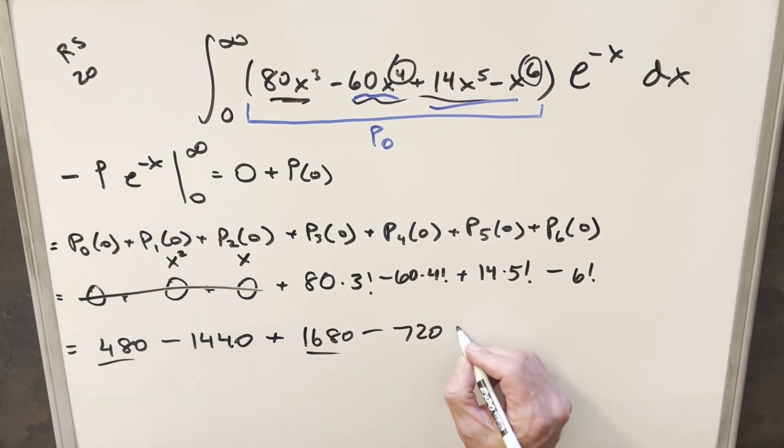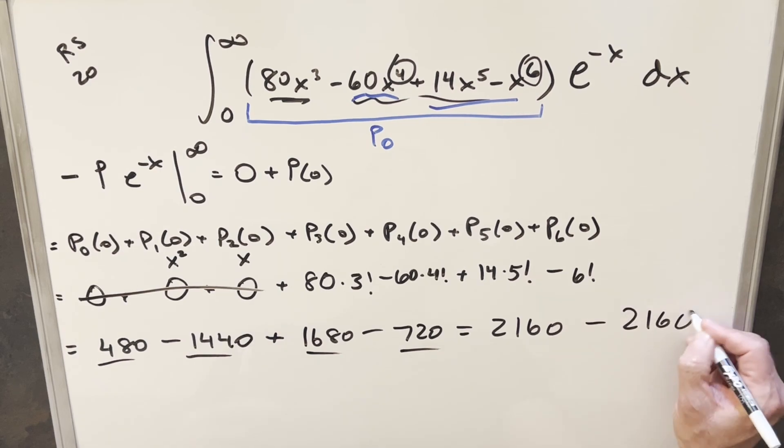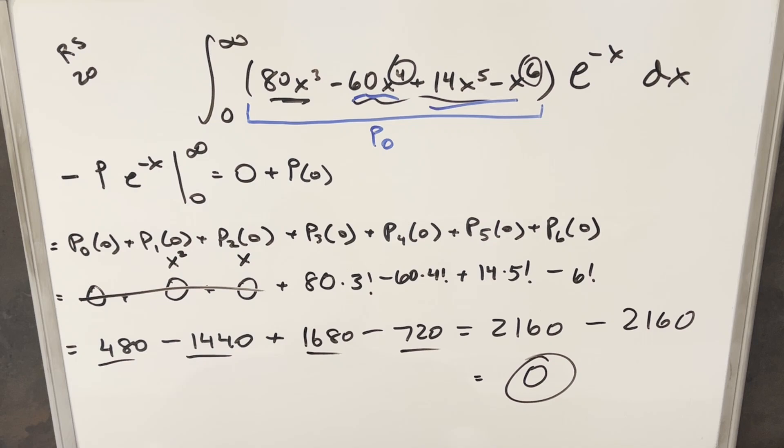Adding together these positive terms, we get 2160. Subtracting the negative terms, we get minus 2160. And so for my final solution, we get just zero. Okay, there you have it. Good integral from MIT 2024. Thanks everyone for watching. Have a good day.